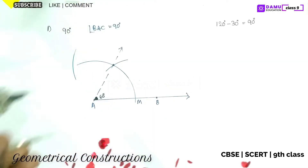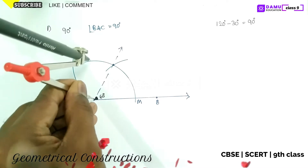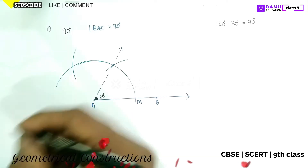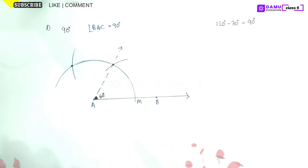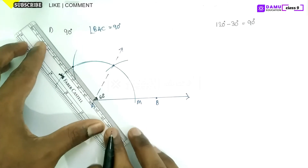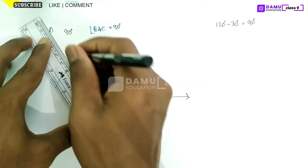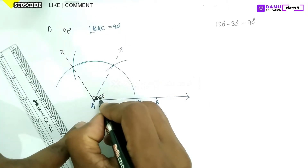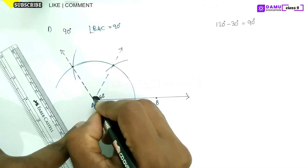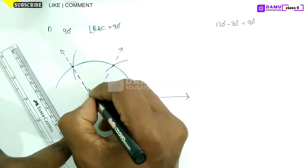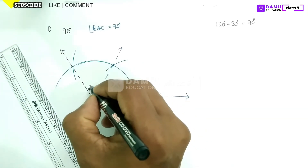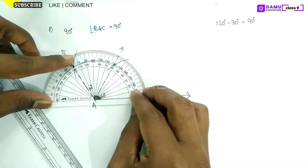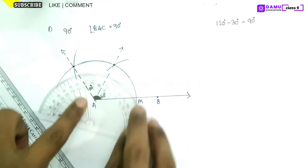Construct 120 degrees by adding another 60 degree arc. Join this arc to get the 120 degree point. This angle is 120 degrees — take your protractor and measure it; you will get exactly 120 degrees.